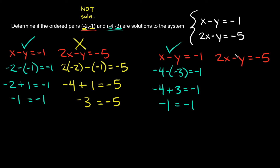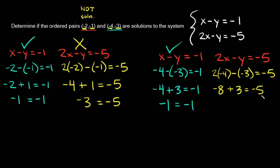Now we just have to check this last equation. So again we're going to plug in negative 4 for x and negative 3 for y. So here we're going to have 2 times negative 4, minus y which is negative 3, and that's equal to negative 5. So then 2 times negative 4 is negative 8, and then minus a negative number is the same thing as adding, so plus 3, setting that equal to negative 5. So negative 8 plus 3 is equal to negative 5, and we're setting that equal to this negative 5. So we got a true statement. This ordered pair negative 4 and negative 3 also works for this equation. Since it worked for both equations in this system, that means negative 4, negative 3 is a solution to the system.